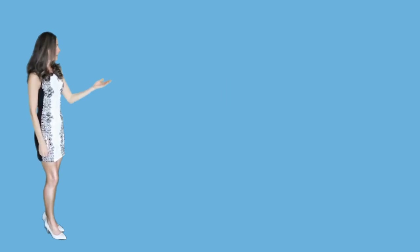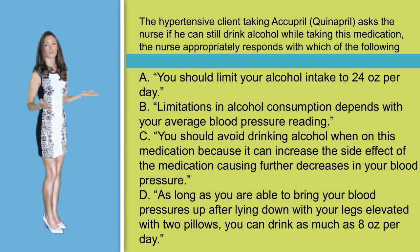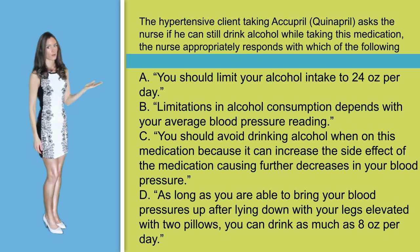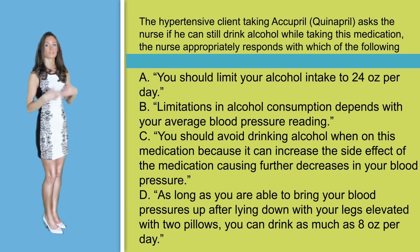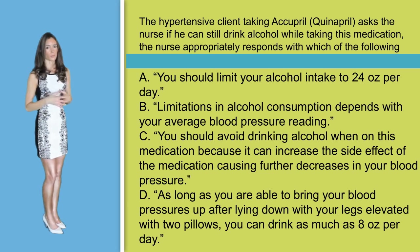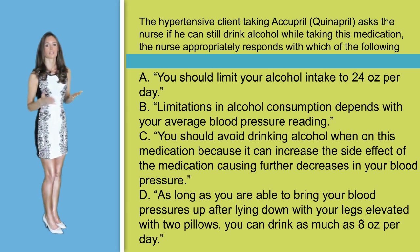Question number four. The hypertensive client taking Acupril asks the nurse if he can still drink alcohol while taking his medication. The nurse appropriately responds with which of the following? A. You should limit your alcohol intake to 24 ounces per day. B. Limitations in alcohol consumption depends with your average blood pressure reading. C. You should avoid drinking alcohol when on this medication because it can increase the side effects of the medication causing further decreases in your blood pressure. Or D. As long as you are able to bring your blood pressure up after lying down with your legs elevated on two pillows, you can drink as much as eight ounces per day.